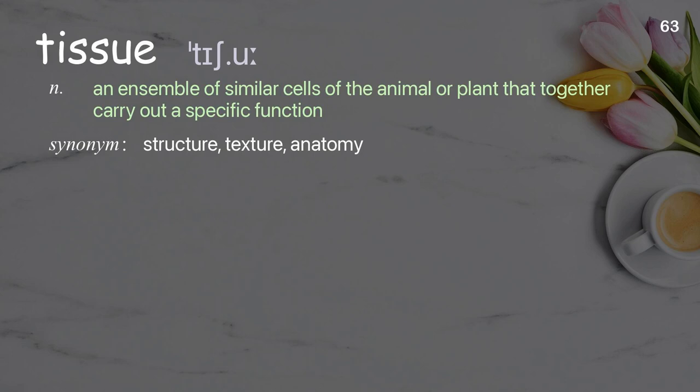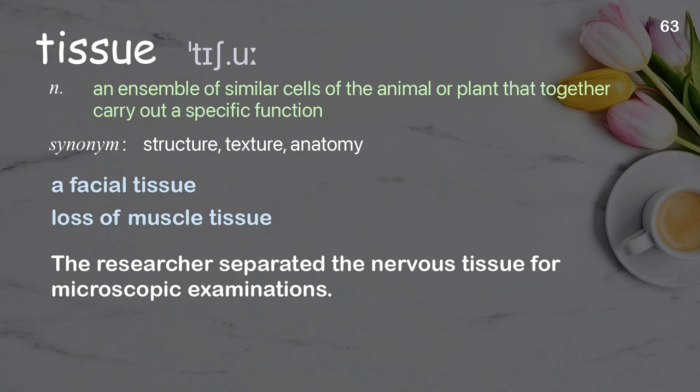Tissue: an ensemble of similar cells of the animal or plant that together carry out a specific function. Examples: a facial tissue, loss of muscle tissue. The researcher separated the nervous tissue for microscopic examinations.